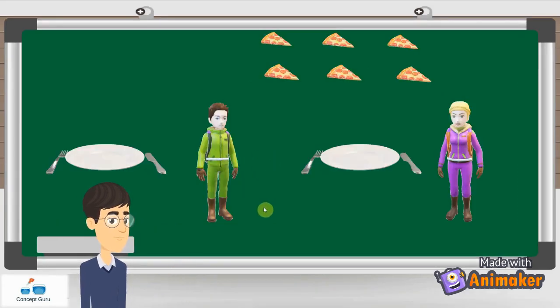We have two friends here, Sam and Sue. And we have six slices of pizza. Now both Sam and Sue are very happy. Now can you help me to divide the slices of pizza between Sam and Sue?